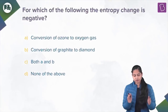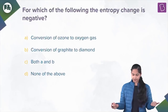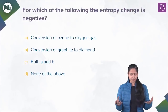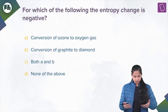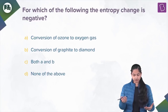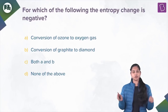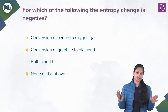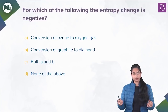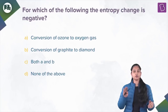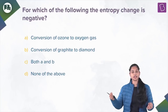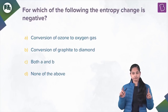The next question: for which of the following is the entropy change negative? Entropy change will be negative when the randomness or disorderliness of the system is decreasing. For a reaction, entropy change is negative when the total number of gaseous moles of reactants is greater than the total number of gaseous moles of products.